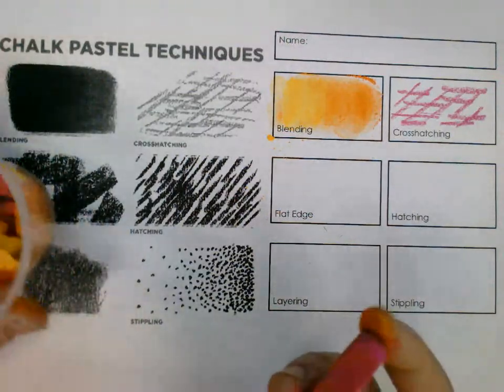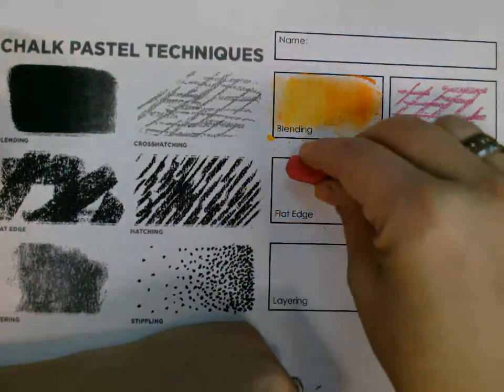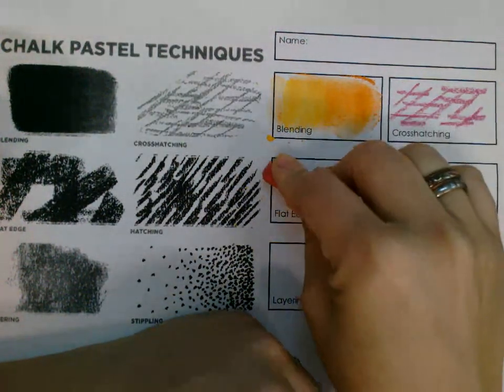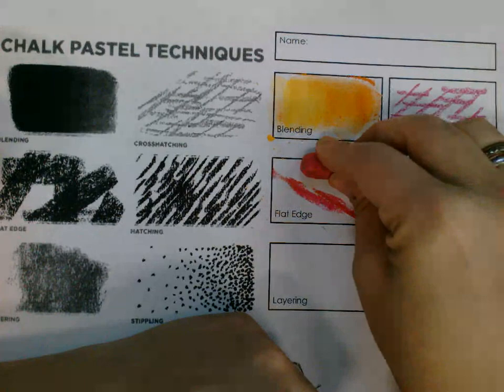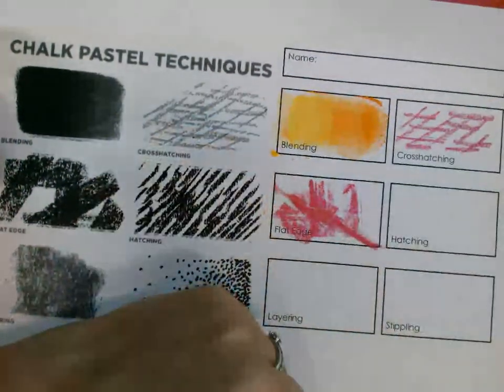The flat edge means that you're not going to use the tip. You're going to try to use the flat edge. So you can go ahead and just take your pastel down. You might have some thick spots. And that's your flat edge.